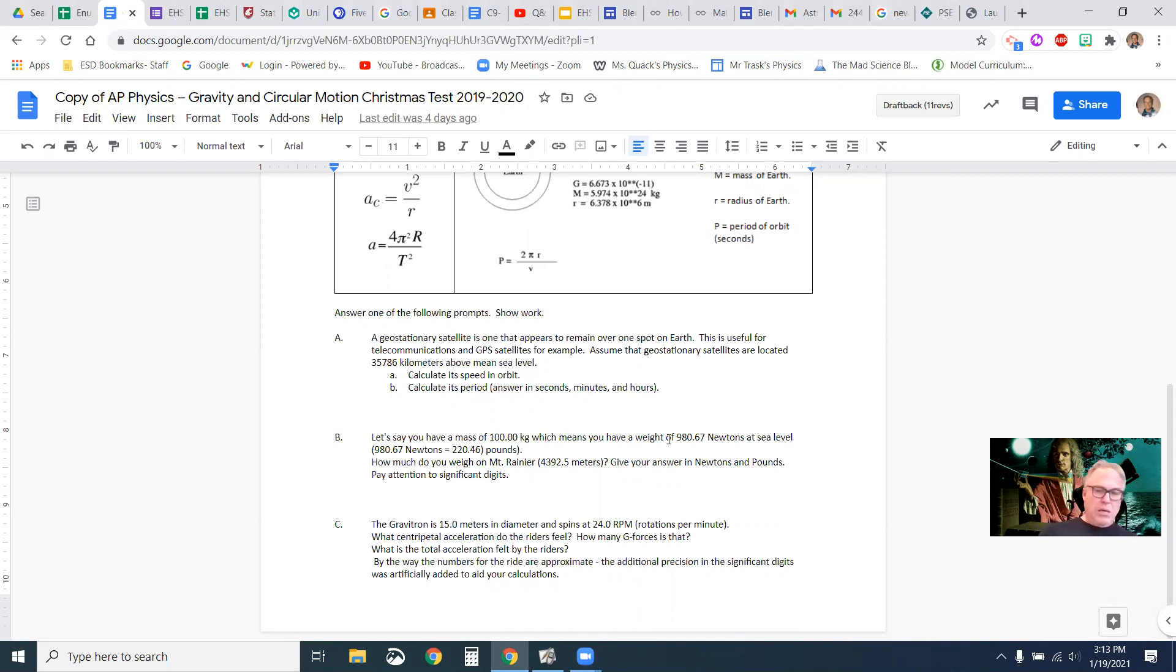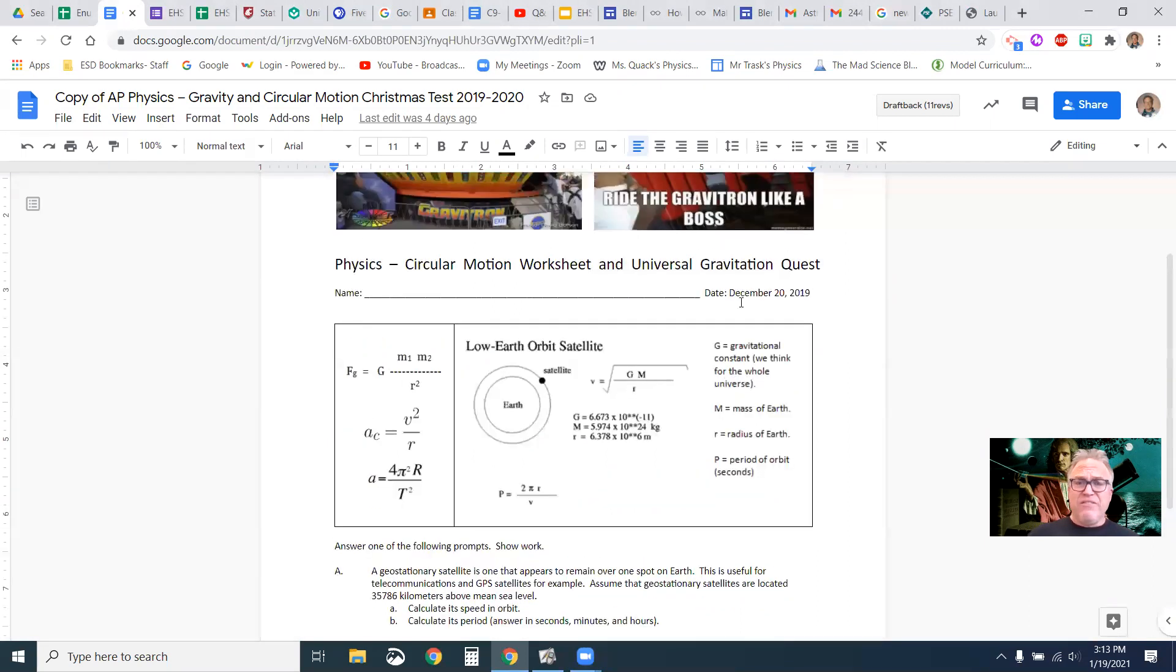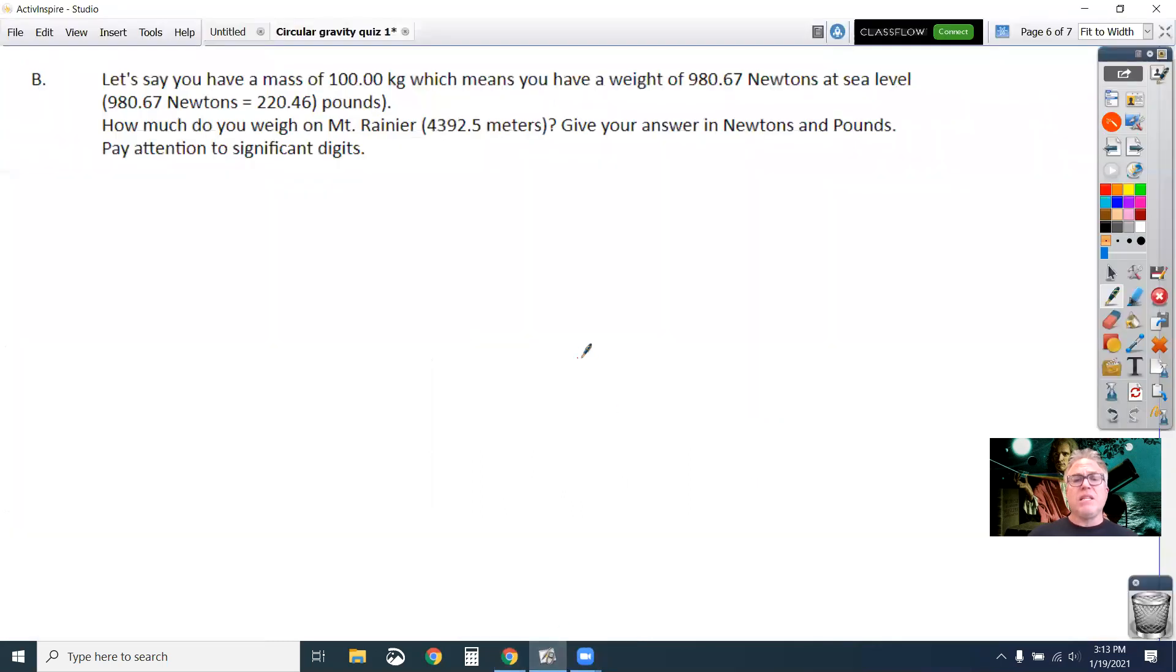And so you could compare to how much you weigh at sea level or Enumclaw is actually at 750 feet. So let's do this one, 750 feet above sea level. All right, so here we go. Now, this is basically a universal law of gravitation problem. And so let's write that down first.